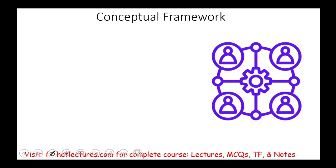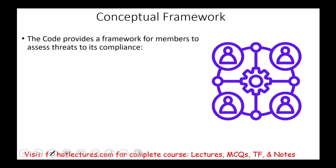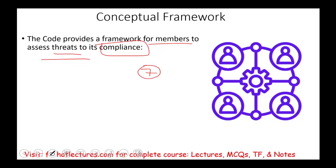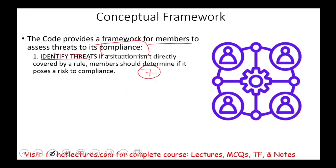Let's discuss the conceptual framework. The code provides a framework for members to assess threats to its compliance — compliance with the principles. So the first thing you have to do is identify threats, and this is what we're going to be discussing: seven different threats. A threat is something that's going to undermine your ability to hold your integrity and your principles — the six principles we learned about in the prior session.